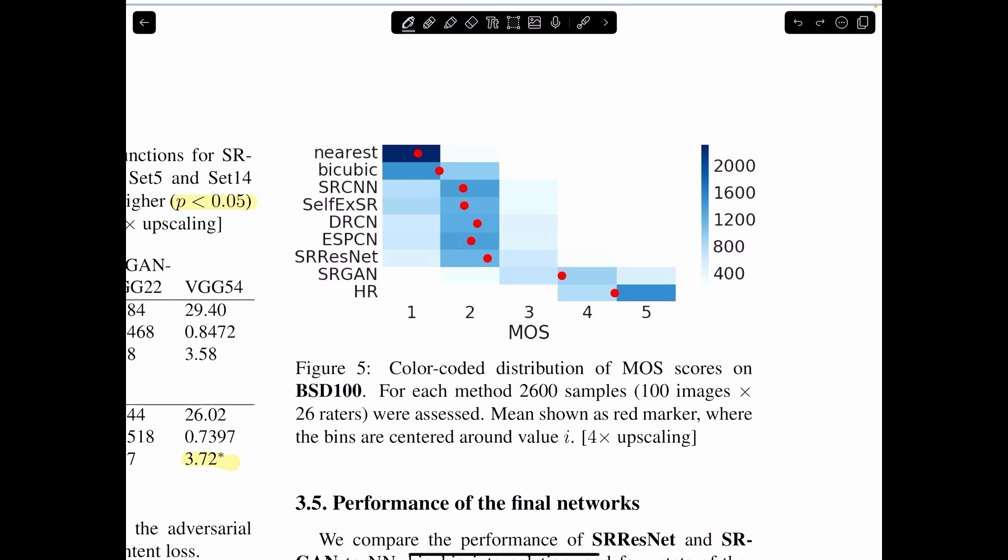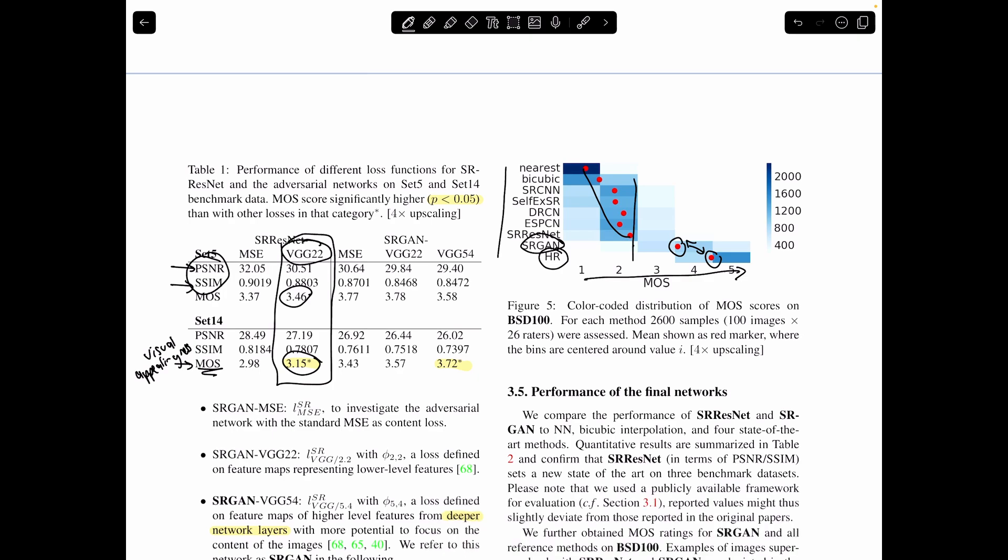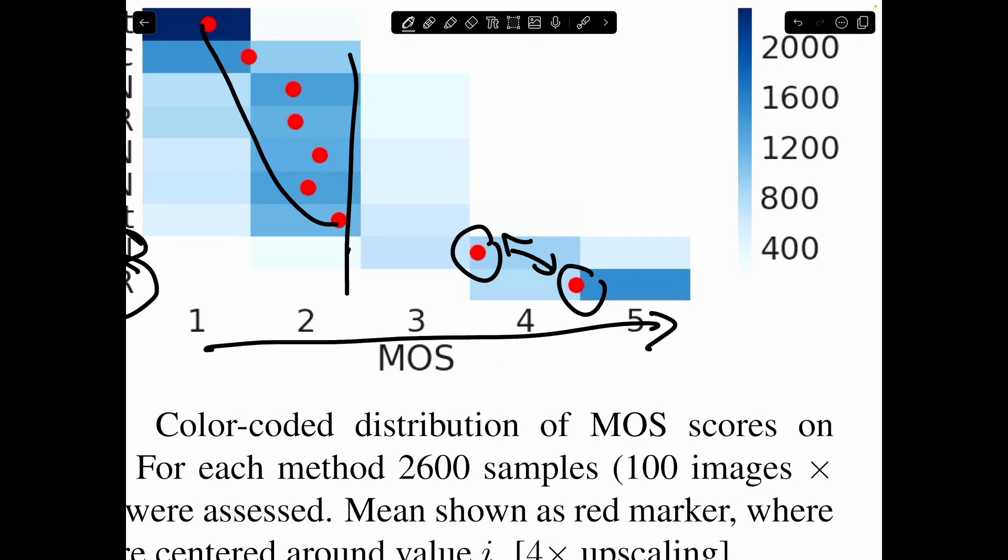And so this is just mean opinion scores. So you can see higher mean opinion scores here, and then these are all the networks. And so you can see the original, the best possible quality image, the high resolution image is here. The SRGAN is getting really close there, and everything else is kind of up here. And so the SRGAN with this perceptual loss is able to get really close, according to humans, to a more visually pleasing image.